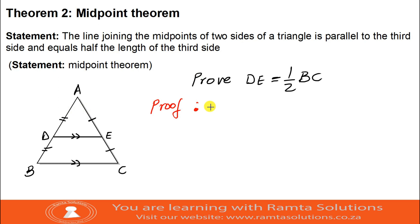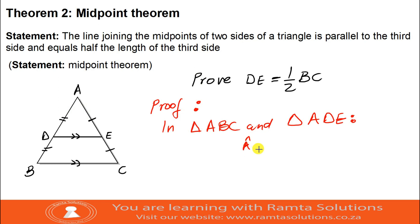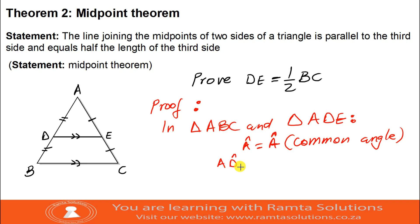In triangle ABC and triangle ADE, I want you to see this. Agree with me that angle A is equal to angle A, which is the common angle. You can also agree that angle ADE is equal to angle B. The reason is corresponding angles, because DE is parallel to BC.